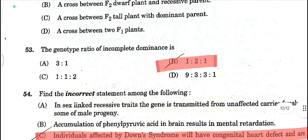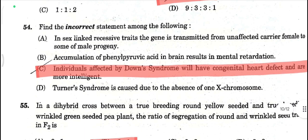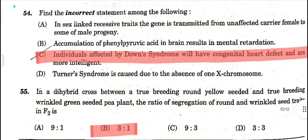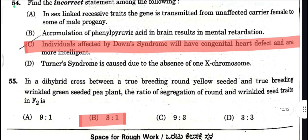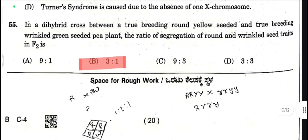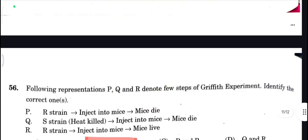The genotype ratio of incomplete dominance is 1:2. Next, individuals affected by Down syndrome will have congenital heart defects — C is your correct answer here. In a dihybrid cross, the ratio 3:1 is your correct answer here.